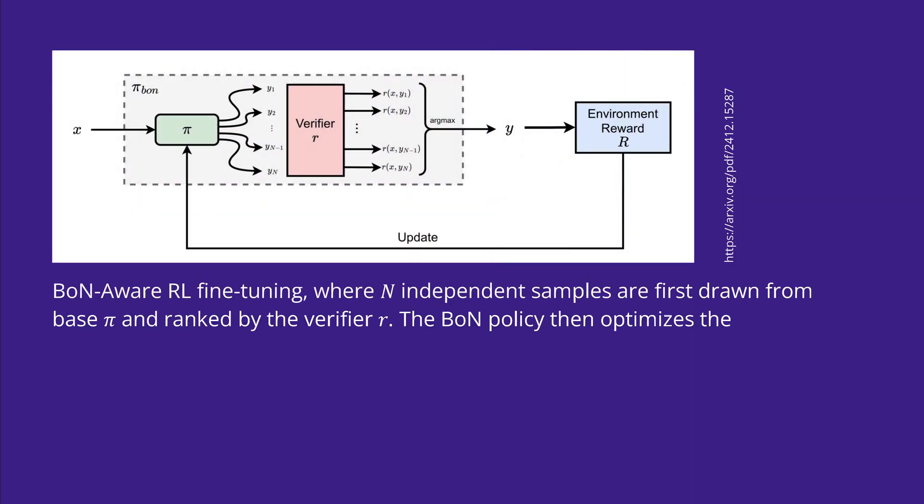If you want a simplified visualization, here we go. We have our pi, our policy that is now optimized for the best of N. We have the classical policy pi, and now turn around multiple solutions, and we have a verifier that gives us an environmental reward, and we update our policies.